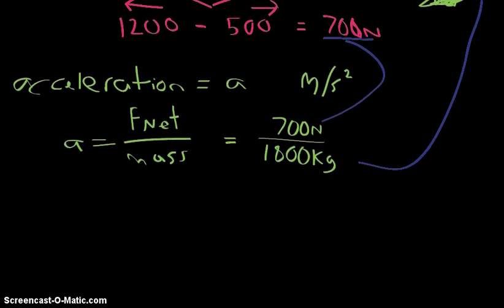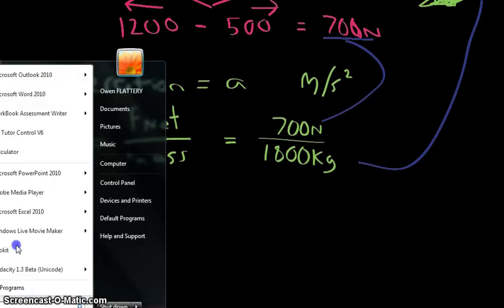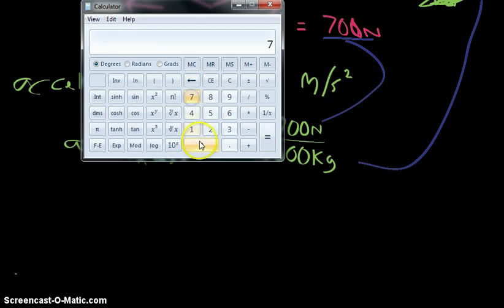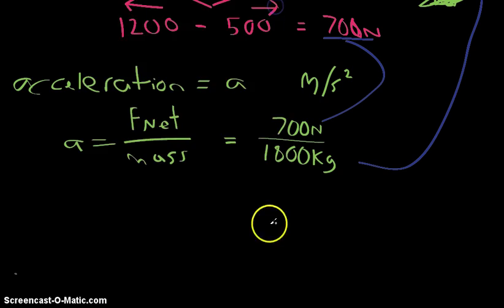Now, if we plug those numbers into a calculator, which I'm going to do just to be sure... okay, so we've got 700 divided by 1800 kg. We've got a result of 0.38, so that means acceleration of this vehicle is going to be 0.38, and we're going to make sure we use the correct unit, meters per second squared. There we go.